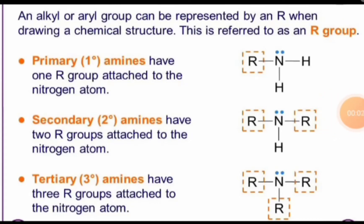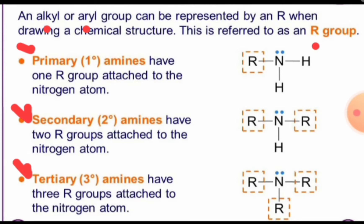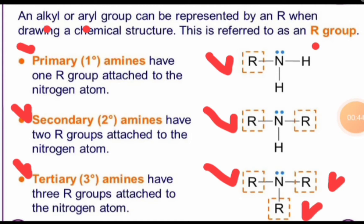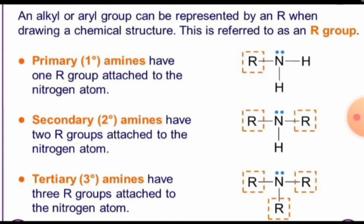Hello students. Amines are the derivatives of ammonia, and based on the number of R groups present on the nitrogen, amines are categorized into primary, secondary, and tertiary amines. The R group may be an alkyl group or an aryl group — aryl meaning an aromatic ring. One R group is primary, two R groups is secondary, and three R groups attached to the nitrogen atom is tertiary amine.